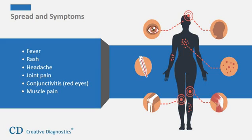Anyone with possible exposure to Zika virus through travel or sexual transmission should go to a doctor or healthcare provider if they have any of the symptoms listed. Symptoms include: fever, rash, headache, joint pain, conjunctivitis or red eyes, and muscle pain.